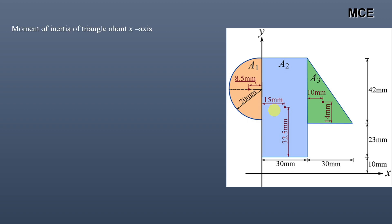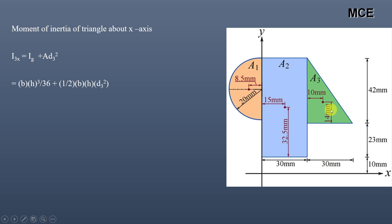The moment of inertia of the triangle about the x-axis equals bh³/36 + A·d₃², where b = 30 mm (parallel to the x-axis) and h = 42 mm. The distance between the centroid of the triangle and the x-axis is 14 + 23 + 10 = 47 mm.